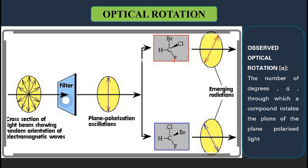The enantiomers rotate the plane polarized light in opposite directions but to the same magnitude. If one enantiomer is rotating the light by 30 degrees in the clockwise direction, the other will rotate the light by 30 degrees in the anti-clockwise direction. So optical rotation alpha is the angle through which a compound rotates the plane of the plane polarized light.